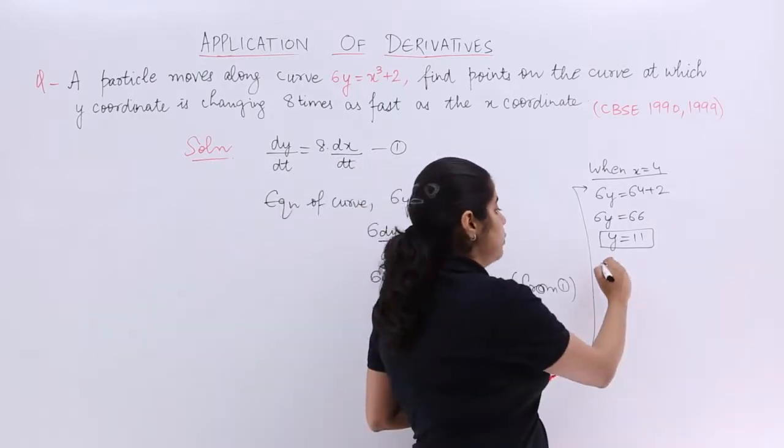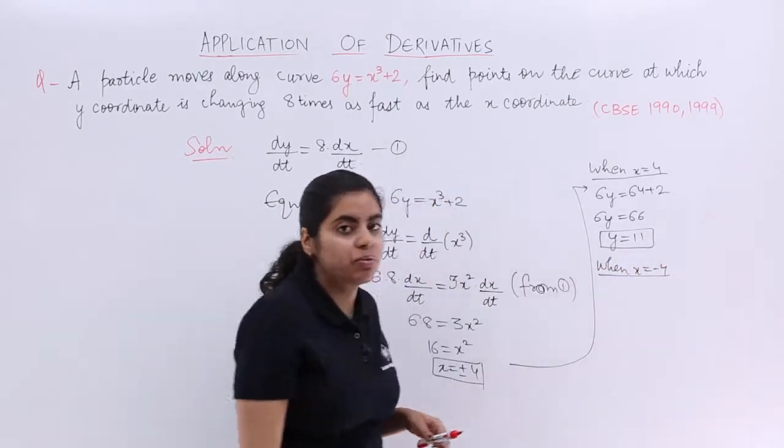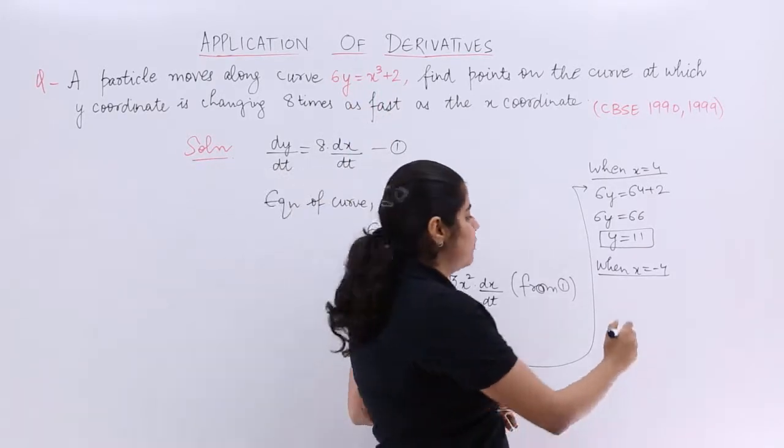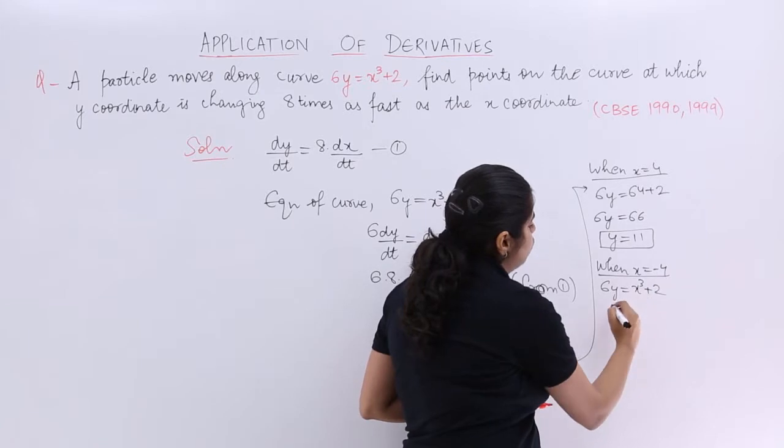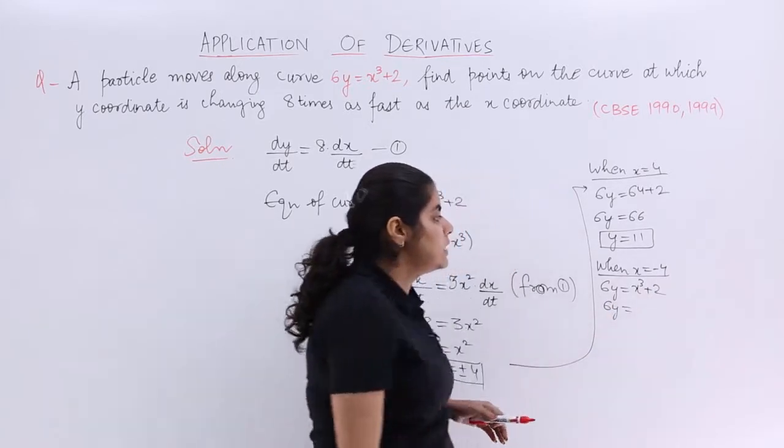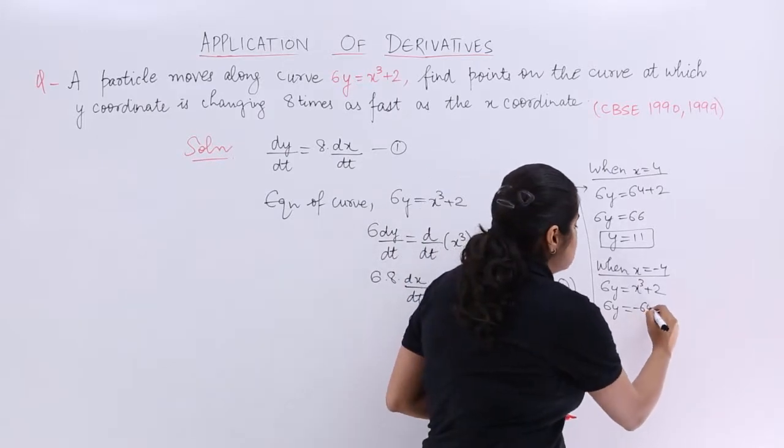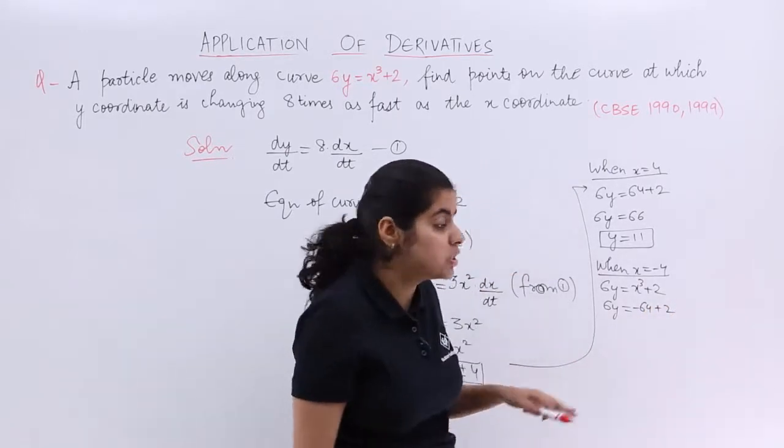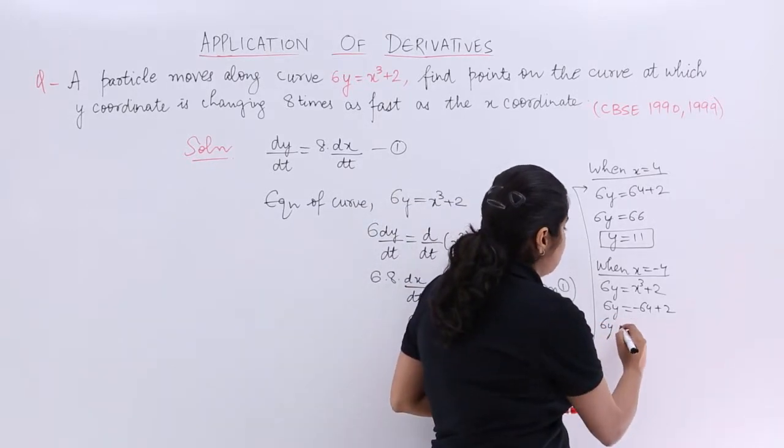What about when x equals minus 4? Similarly, when x equals minus 4, what is the change? 6y equals x cubed, that means minus 4 cubed, which is minus 64 plus 2 this time. Please do not make any mistake in copying the sign also. That's very important.